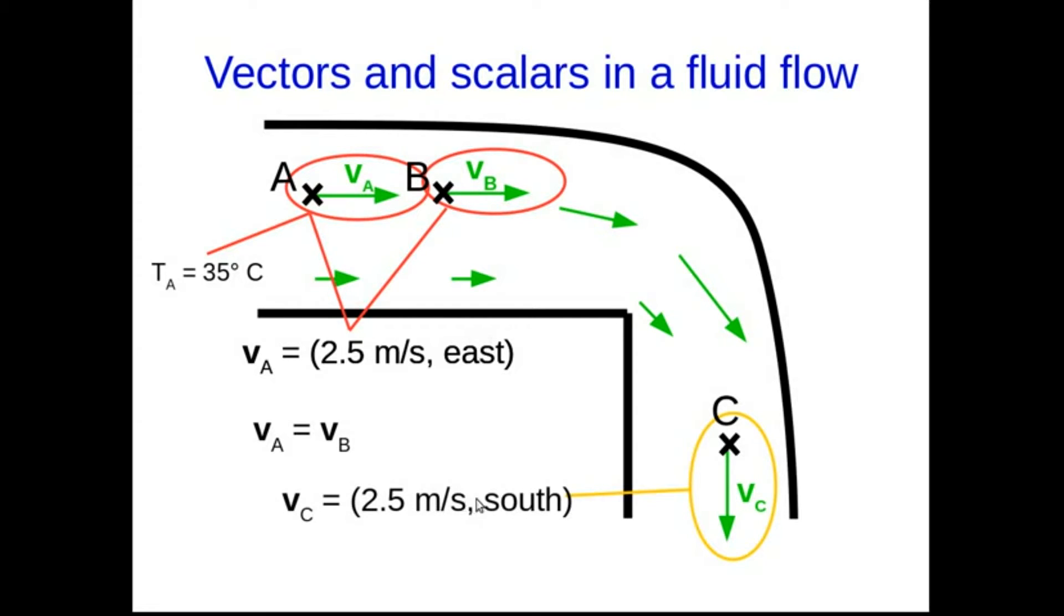As opposed to this VC, let's say it had the same magnitude, 2.5 meters per second, but it was south, it is a different vector. It is not equal to A and B, even though its magnitude is the same.